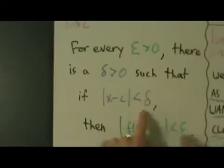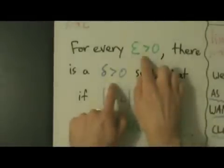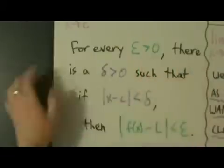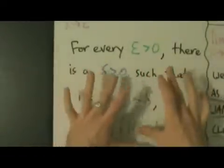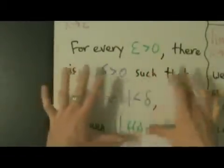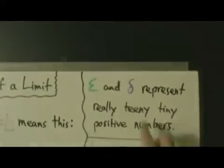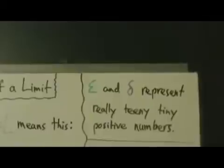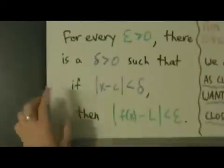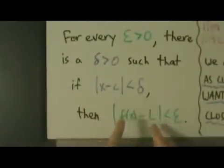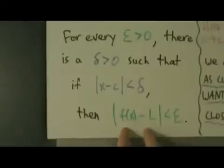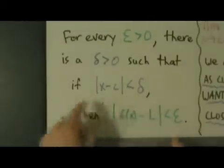What are delta and epsilon here? Well, they're both positive, so they represent any positive numbers. But the idea, when we talk about epsilon-delta definitions like this, is that epsilon and delta represent really teeny tiny positive numbers. So in other words, x and c are really close together and f of x and L are also really close together.